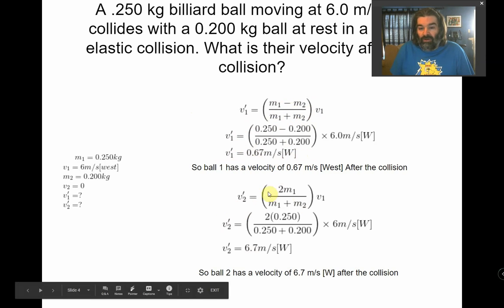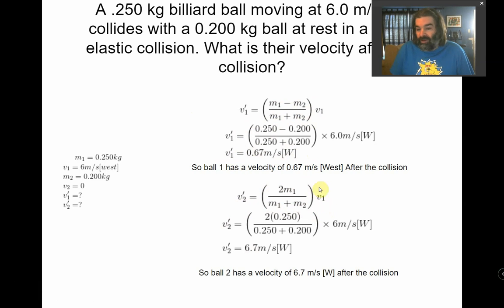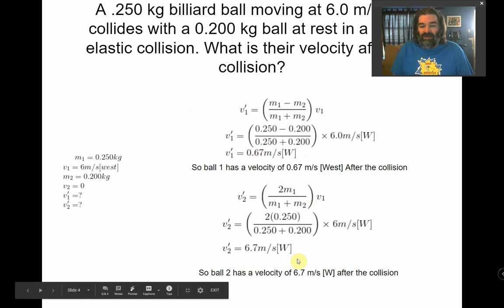The velocity of the second ball is two times m1 over m1 plus m2 times its initial speed of the first ball. Write it out. You find the velocity of the second ball. So ball two has a velocity of 6.7 meters per second west after the collision.